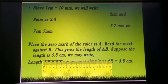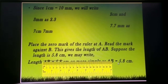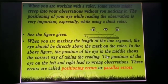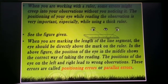Place the zero mark of the ruler at point A and read the mark against B. This gives the length of AB. Suppose the length is 5.8 cm, so AB equals 5.8 cm. When you are working with rulers, some errors might creep into your observation without you noticing. The position of your eyes while you are reading the measurement is very important, especially while using a thick ruler. We have to read the measurement very carefully.